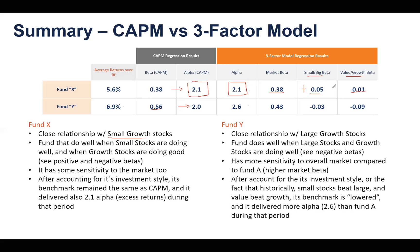For Fund Y, the market beta has been lowered slightly — part of that beta was attributable to other factors, such as the small-versus-large dimension. When small stocks are outperforming large stocks, this fund is actually doing poorly, as shown by the negative coefficient. Similarly, when growth stocks are being outperformed by value stocks, this fund is also doing poorly. We can say this fund has a close relationship with large and growth stocks.